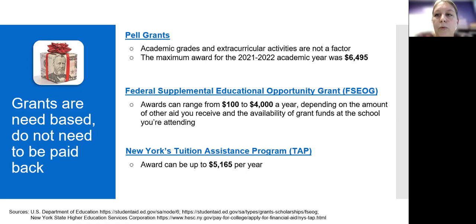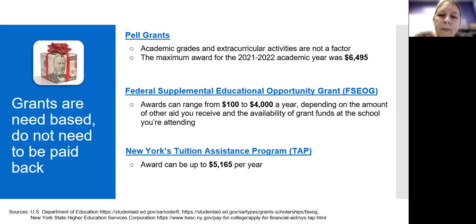Both of those come from the federal government and are purely based on financial need. There's also New York State's Tuition Assistance Program, or the TAP Award. This award can be up to $5,165 a year and is also based solely on financial need.